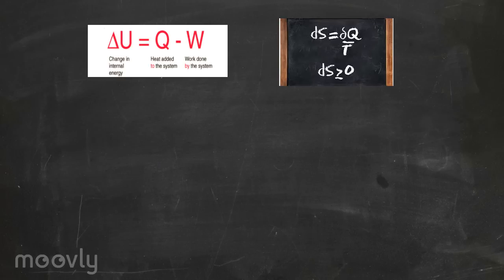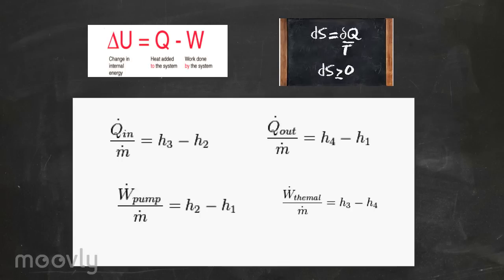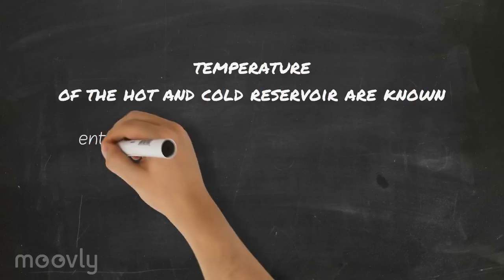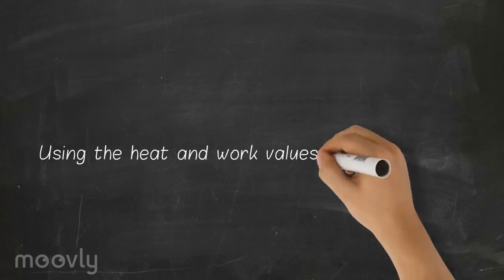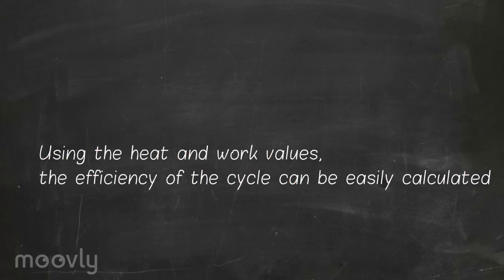Using the first and second law of thermodynamics, the heat addition, heat rejection, work input, and work output can be found using the following equations. If the temperature of the hot and cold reservoirs are known, the enthalpies at each point can be found using the medium's saturation and physical properties through databases such as the NIST chemistry webbook. Using the heat and work values, the efficiency of the cycle can be easily calculated.